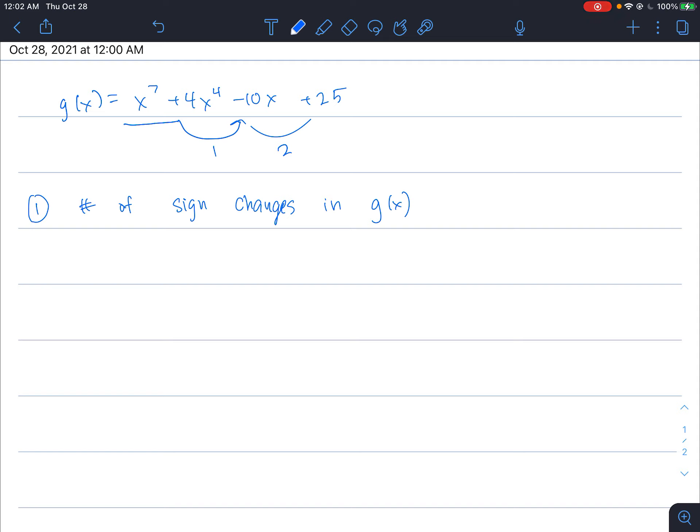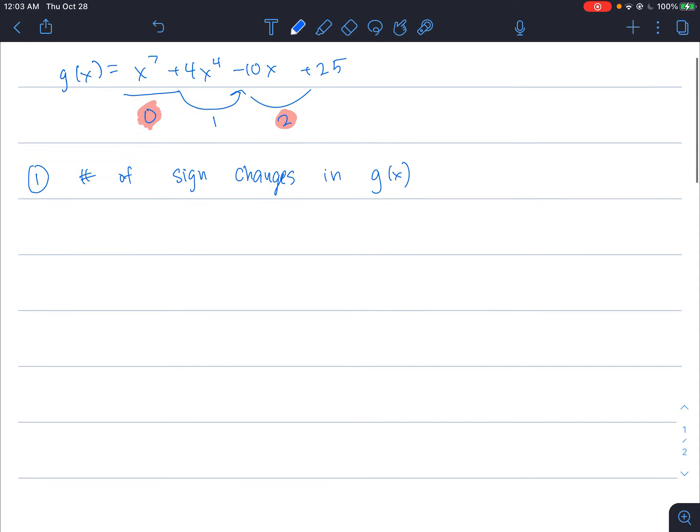Now in Descartes' rule of signs, it says that we'll take the total number of sign changes and every other number less than that. So zero won't be a possible number of positive real zeros. Sorry, one won't be, but zero will be. So this polynomial will have either two positive zeros or it's not going to have any positive zeros. That's what Descartes' rule of signs says.